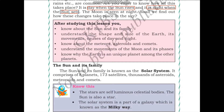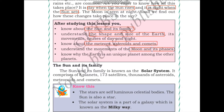After studying this lesson, you will know about the Sun and its family, understand the shape and size of the Earth and its movement, causes of day and night, know about meteors, asteroids, and comets, understand the movements of the moon and its phases, and know why Earth is a unique planet amongst the other planets.